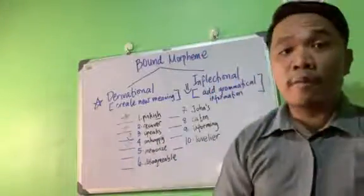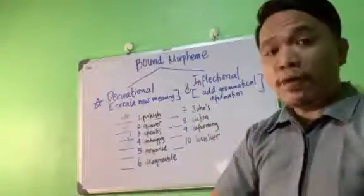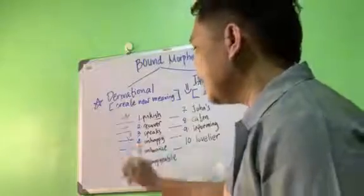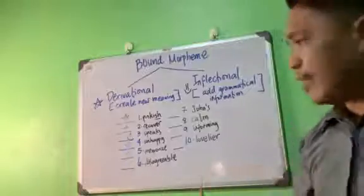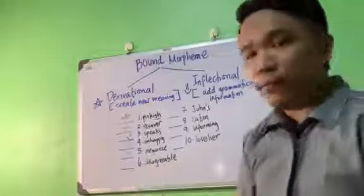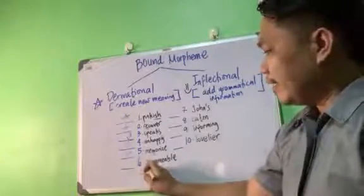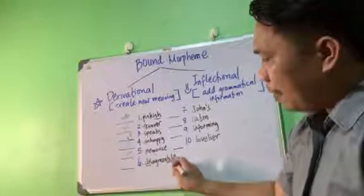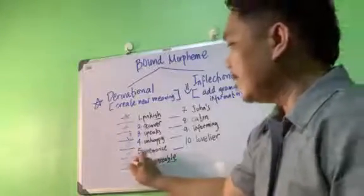How about the word 'memorize'? From 'memory' to 'memorize' — from noun to verb — they change their meaning. So therefore, this is a star. Next: 'disagreeable.' From the word 'agree' — positive — then 'disagree,' giving a negative connotation for an action, and 'disagreeable.' The prefix 'dis-' and the suffix '-able' change the meaning from the word 'agree.' So therefore, this is a star.